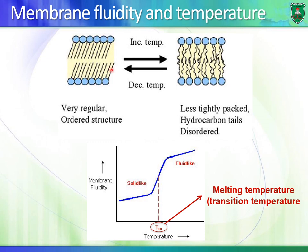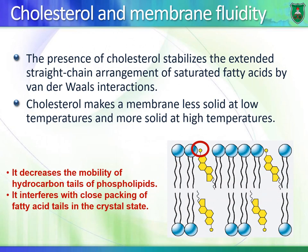There is a transition temperature — a melting temperature — where the membrane switches rapidly between being rigid (solid-like) and fluid-like. This is similar to the concept of the P50 value that we will encounter when we talk about hemoglobin.